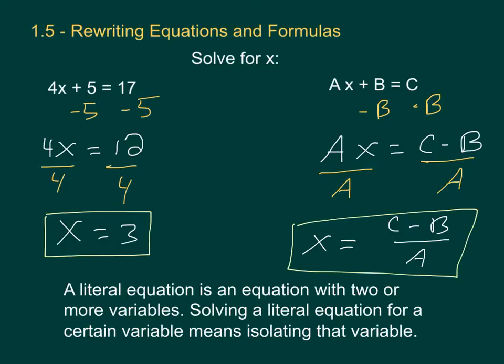That leaves me with x = (C - B)/A. And that is my final answer. I've rewritten that equation by solving for x. It may seem like that doesn't look like a final answer, but that's what it's going to look like. Let's have some practice.